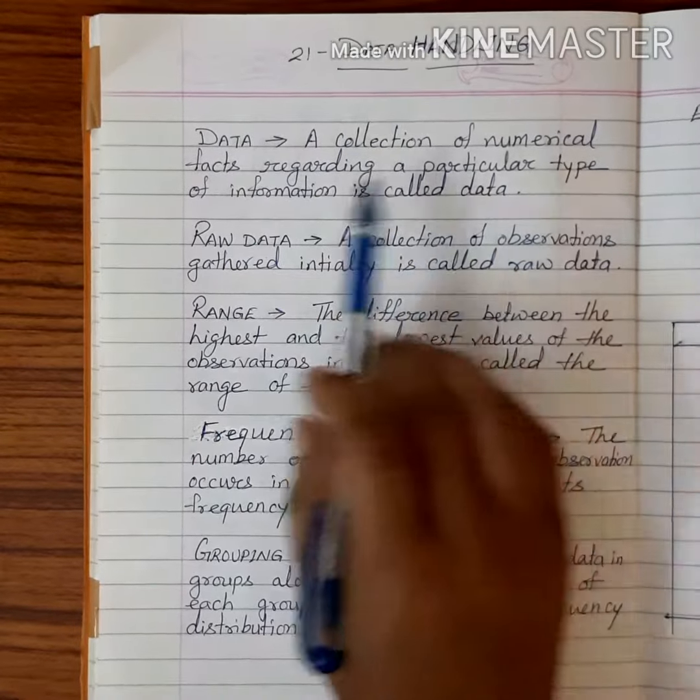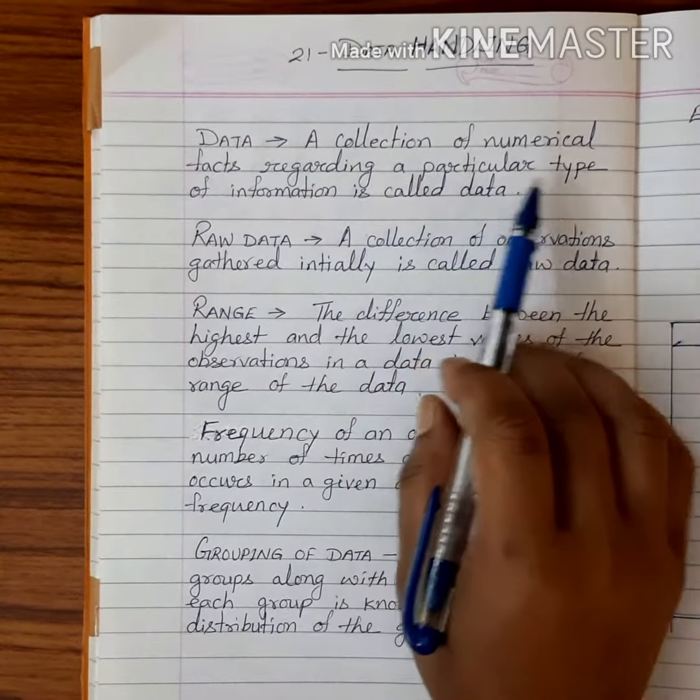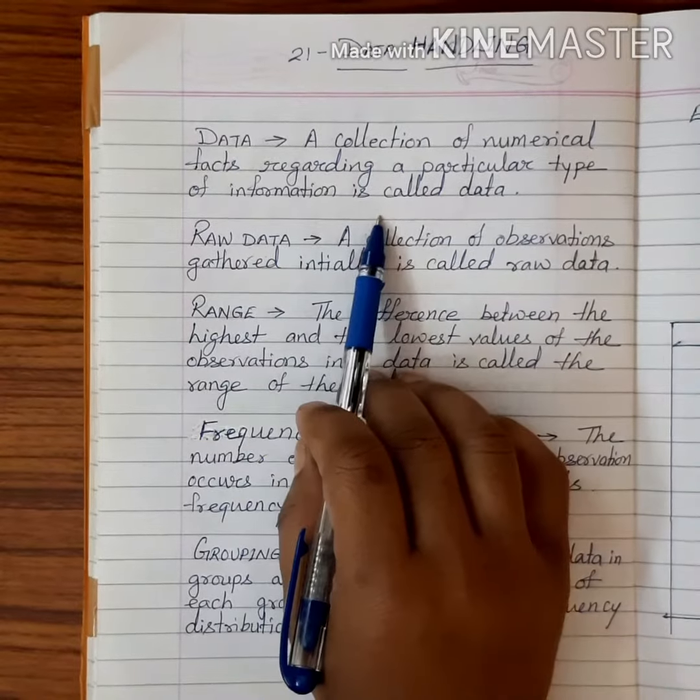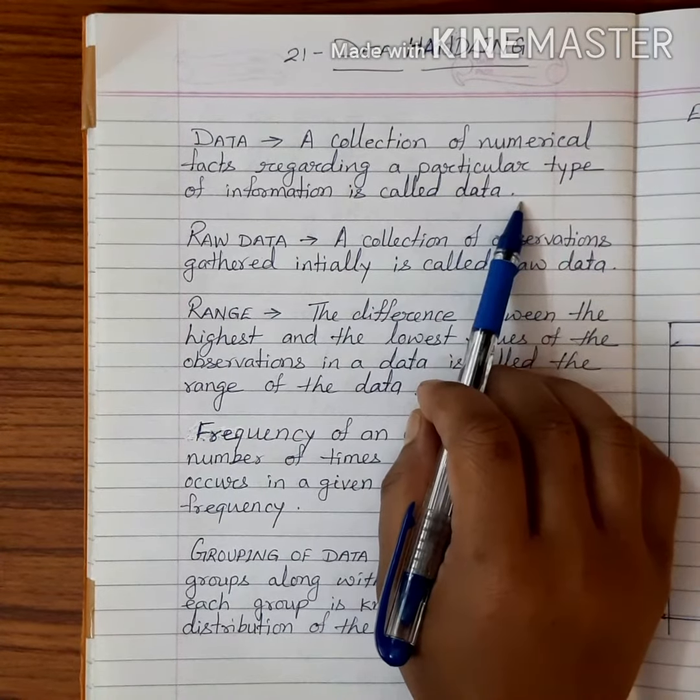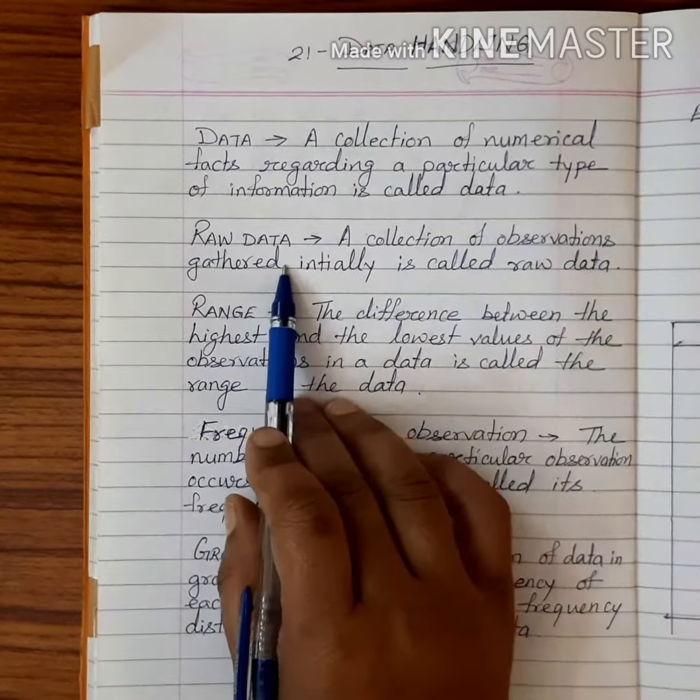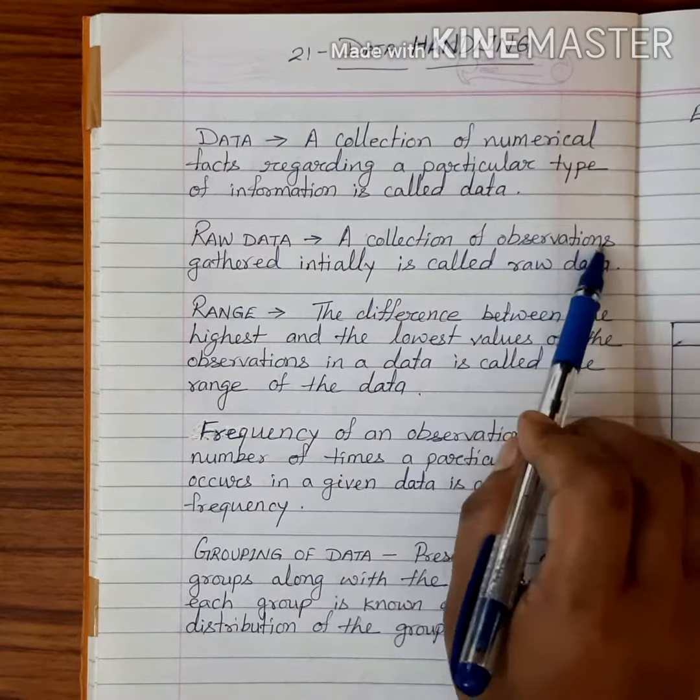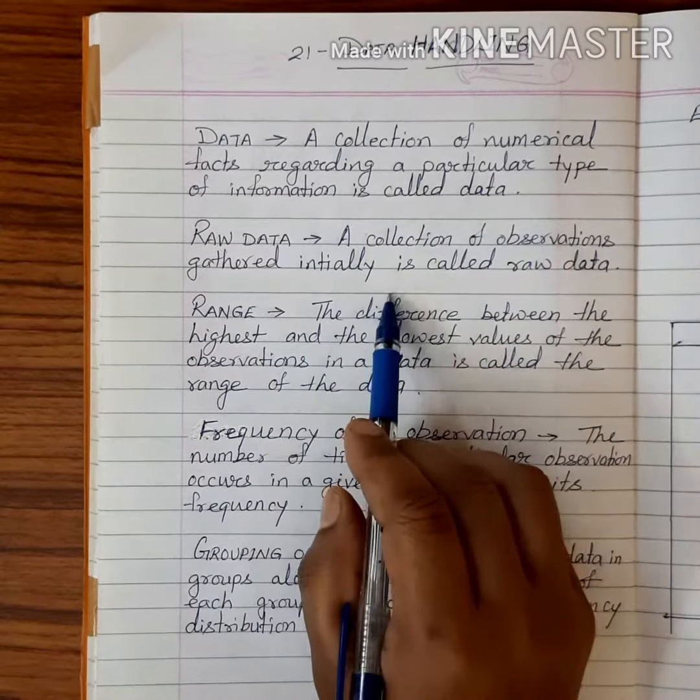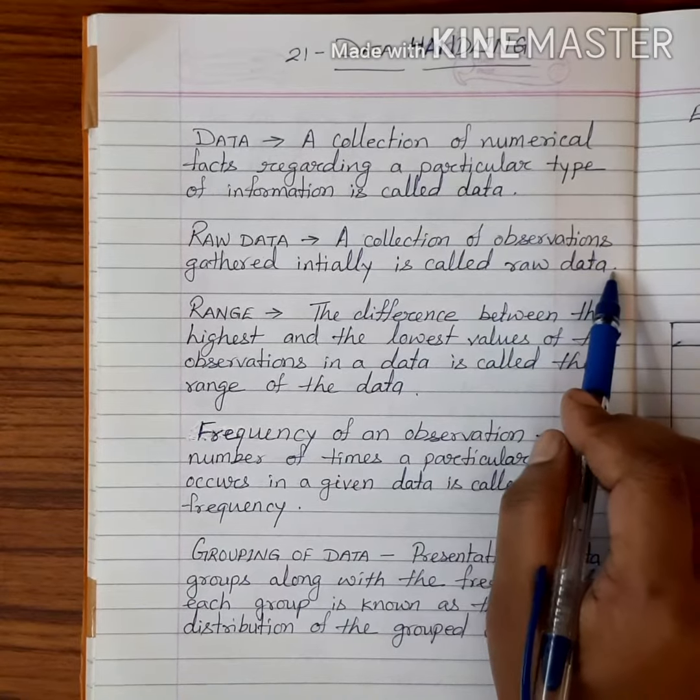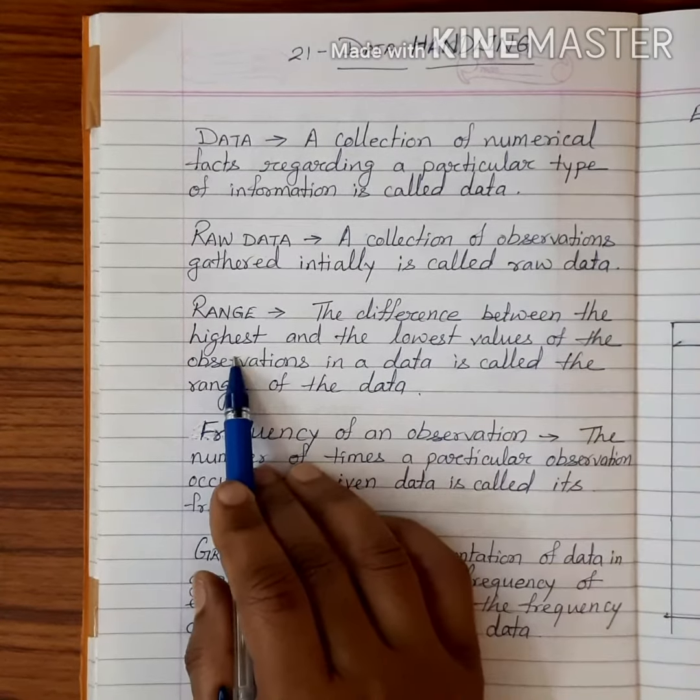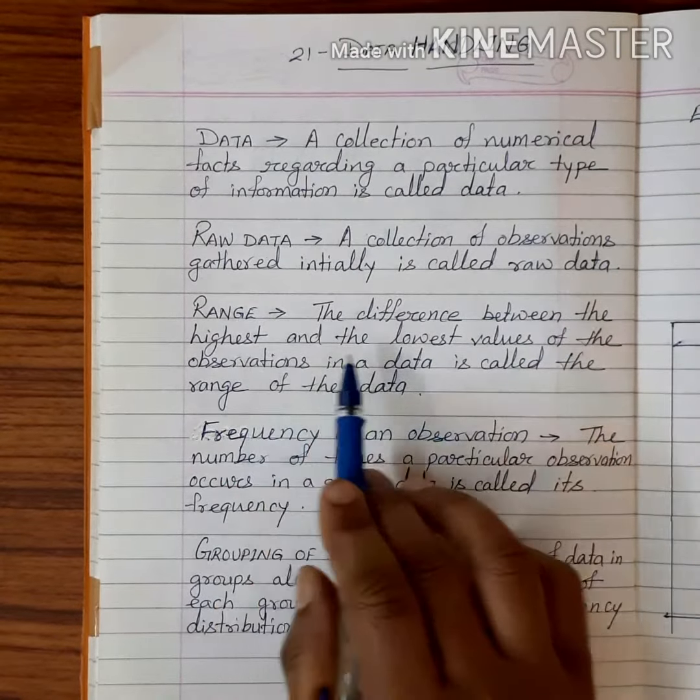Welcome students, today we start new chapter 21: data handling. First, what is the meaning of data? Data means a collection of numerical facts regarding a particular type of information is called data. Raw data means a collection of observations